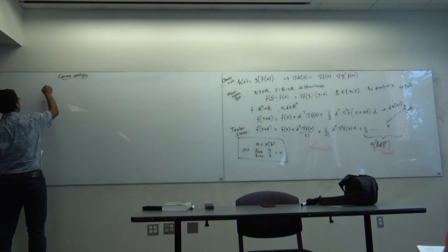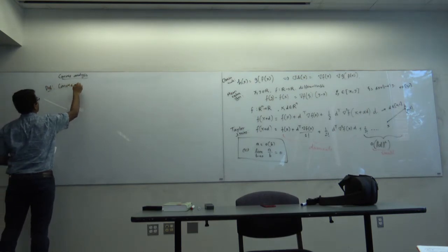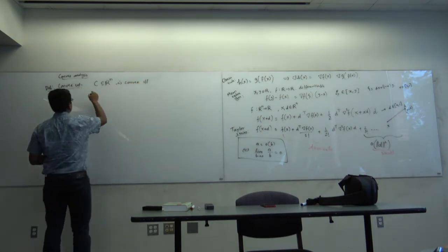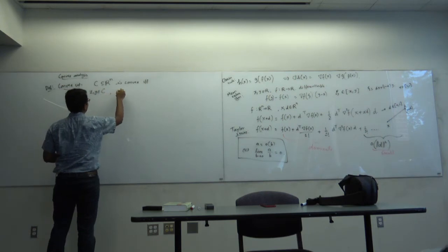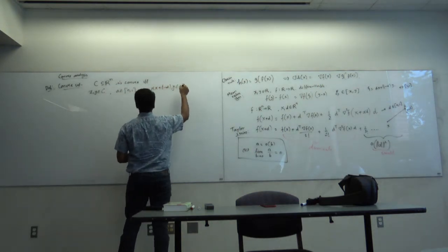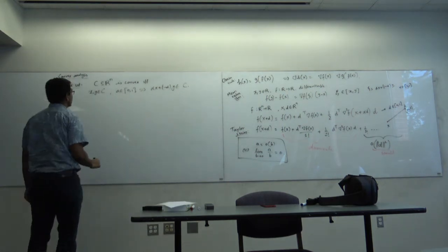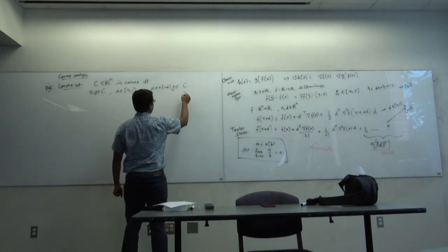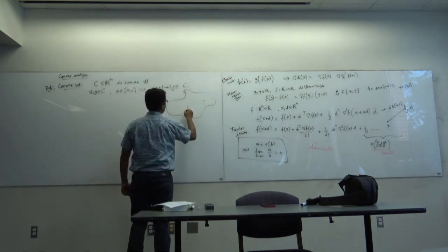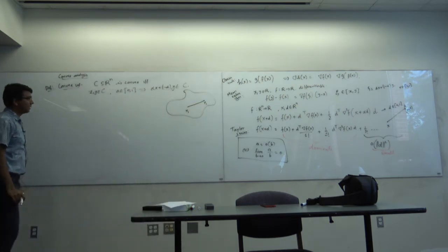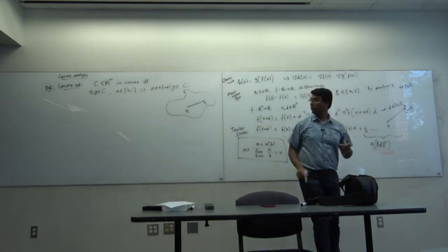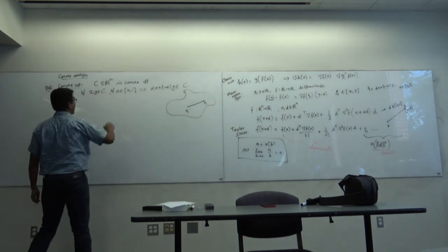The first definition is convex set. A set C in Rn is convex if and only if for all x, y in C and α in [0,1], we have α·x + (1-α)·y in C. The picture: I have a set, I pick two points x_1 and y_1, draw a line between them, and the entire line should lie within the set. This must hold for every x, y in C and every α in [0,1].